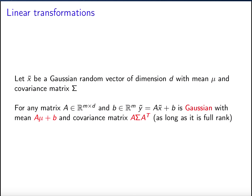If you have a Gaussian random vector with a certain mean and covariance and you apply a deterministic matrix A and add a vector B, the distribution remains Gaussian. We proved this in the scalar case; in the vector case the proof is similar but uses multivariate calculus. The mean of the result is A mu plus B and the covariance matrix is A sigma A-transpose.